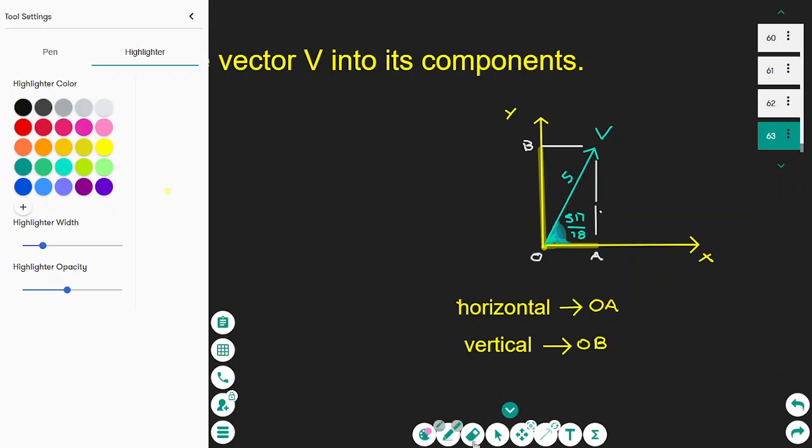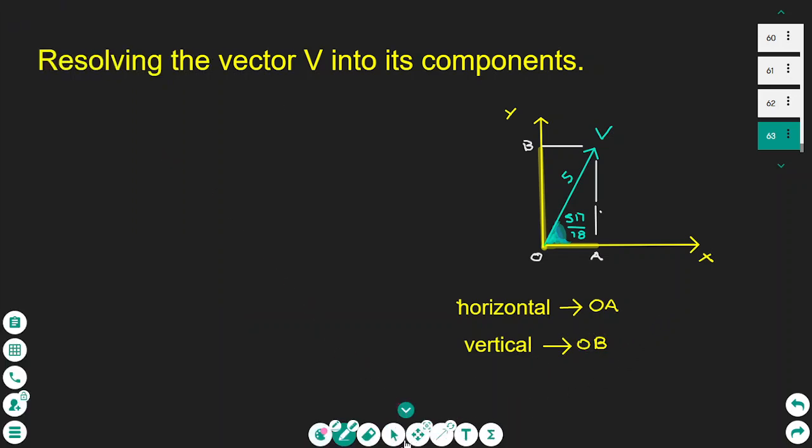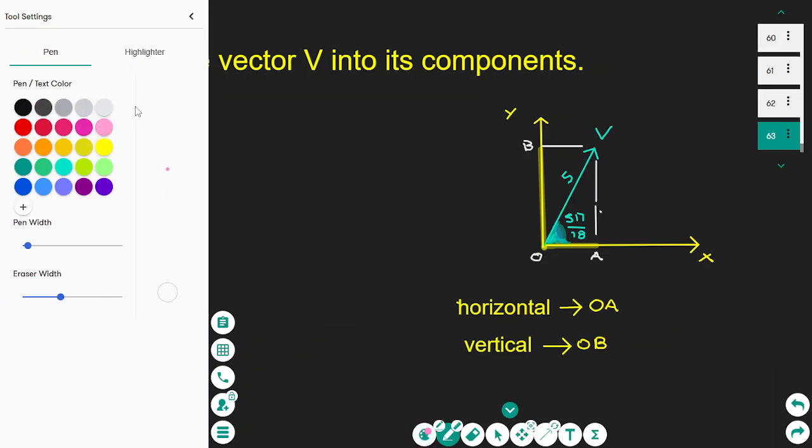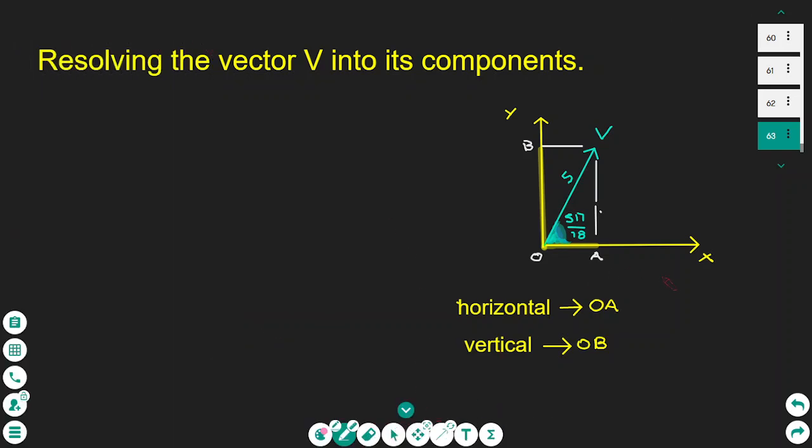To find this distance, we use trigonometry. For the horizontal OA, it's the magnitude of the vector, 5, times the cosine of the angle, which is 5π/18.